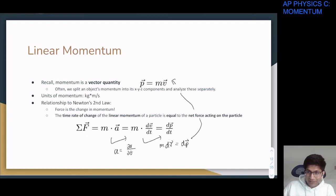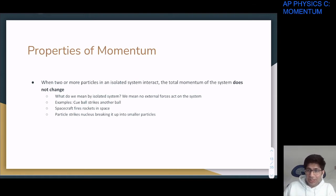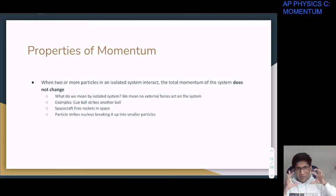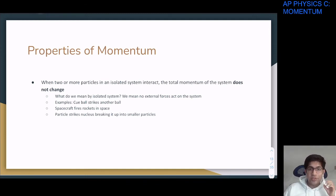When two or more particles in an isolated system interact, the total momentum of the system does not change. This is analogous to energy conservation. In an isolated system with no external forces, total momentum is conserved. Examples include a cue ball striking another, a spacecraft firing a rocket, and nuclear fission or fusion.